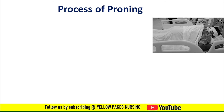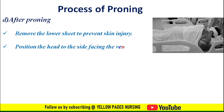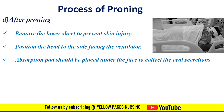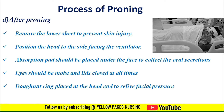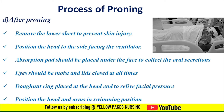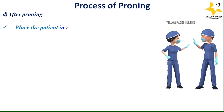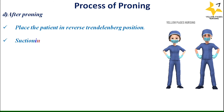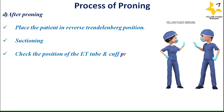Ensure pillows are positioned properly on the patient's chest and pelvis. The patient is lowered carefully toward the ventilator onto the supporting pillows into the prone position. After proning: remove the lower sheet to prevent skin injury, position the head to the side facing the ventilator, place an absorption pad under the face to collect oral secretions, keep eyes moist with lids closed at all times, and place a donut ring at the head end to relieve facial pressure. Position the head and arms in the swimming position.